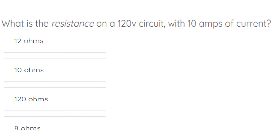What is the resistance on a 120-volt circuit with 10 amps of current? The correct answer is 12 ohms.